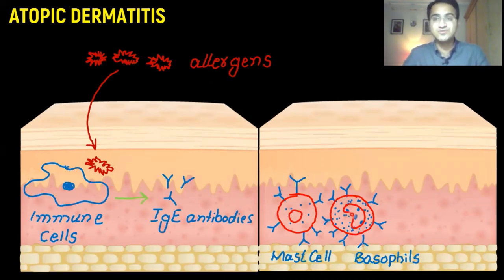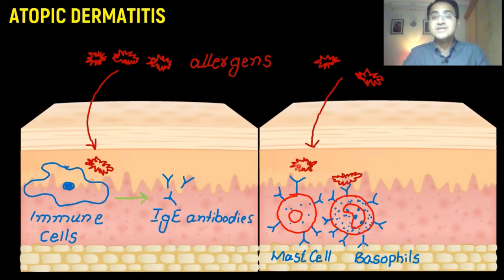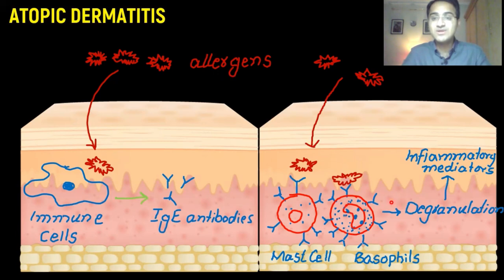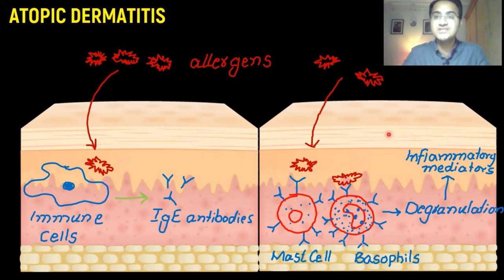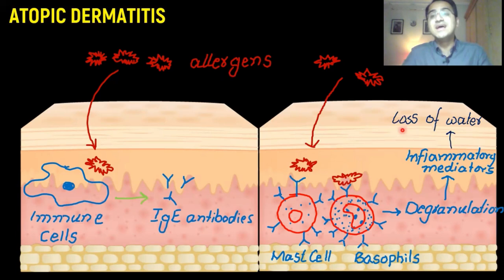On second or subsequent exposure, when allergens enter the body, they are taken up by these antibodies, which signal the cells to degranulate — causing the cells to rupture. This degranulation results in the release of inflammatory mediators. These inflammatory mediators destroy the surface of the skin, resulting in loss of water and dry itchy skin.